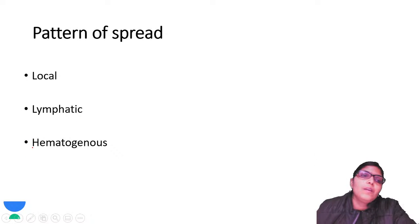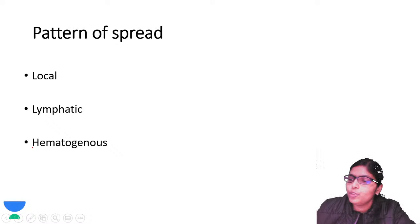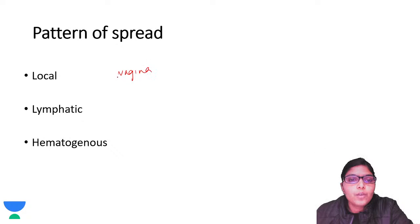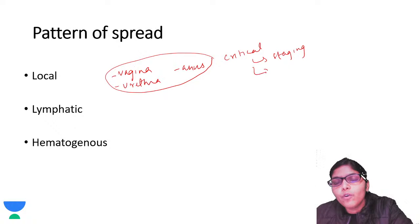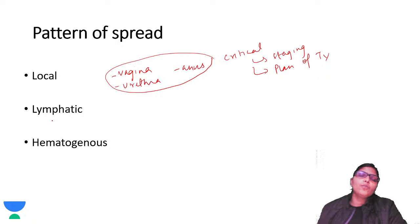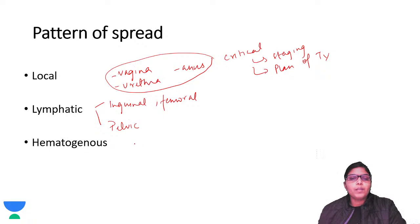Pattern of spread: any tumor has three types. First is local spread - from the vulva to vagina, urethra, and anus. These three are critical structures and have a very important role in staging and treatment planning. Second is lymphatic spread to inguinal, inguinofemoral, and then pelvic lymph node groups. Third is hematogenous or blood-borne metastasis, which goes to lung and liver.